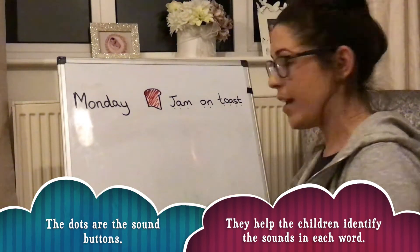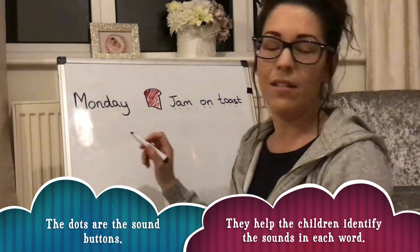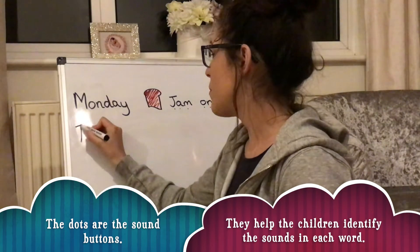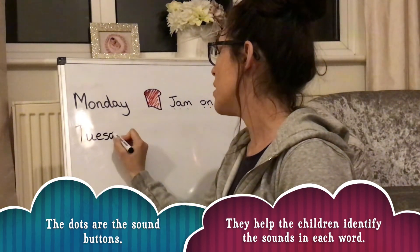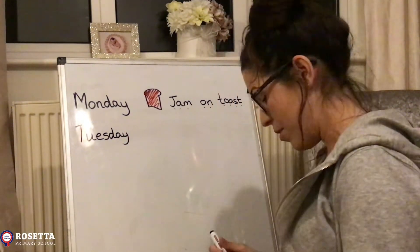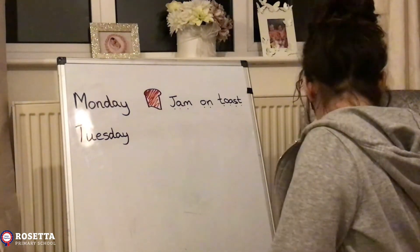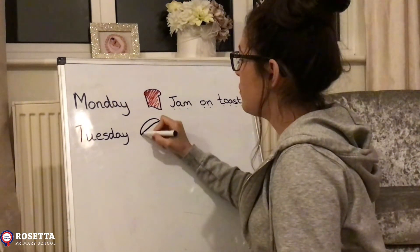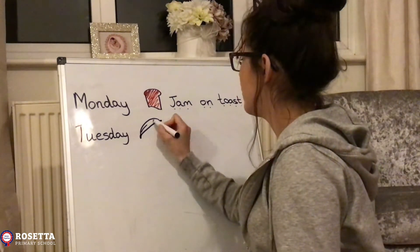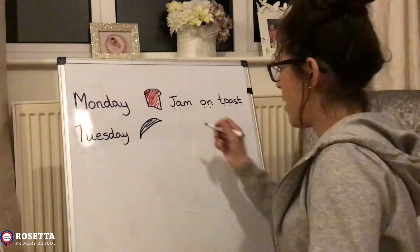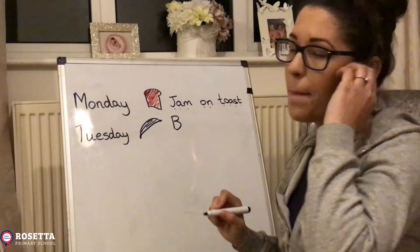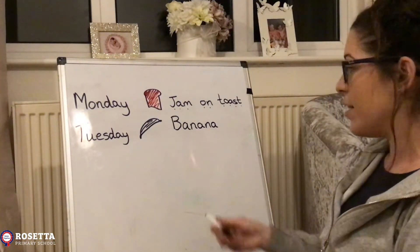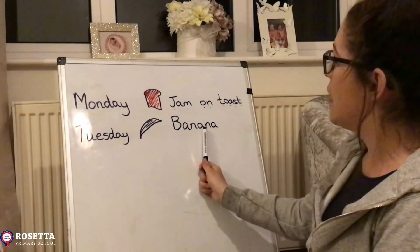My next day of the week is Tuesday. It sounds like it should start with a 'tch' sound, but it isn't — it's t-t, Tuesday. Tuesday is quite tricky to spell, so you'll probably need a grown-up to help you. On Tuesday, my snack is going to be a banana — b-a-n-a-n-a, banana. It's quite a funny word!